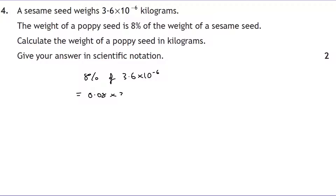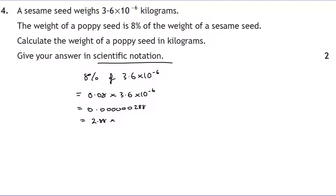Calculating 0.08 × 3.6 × 10⁻⁶ gives 0.000000288. The answer needs to be in scientific notation, so that's 2.88 × 10⁻⁷ kilograms. The original units were in kilograms, so our answer is already in kilograms.